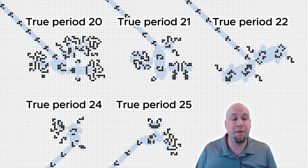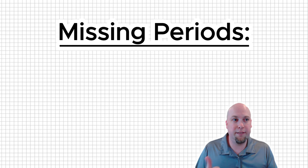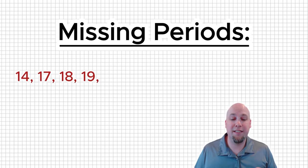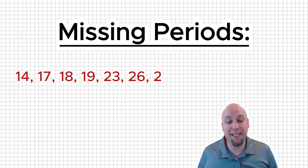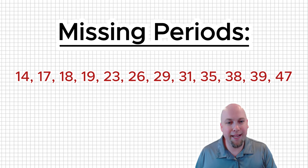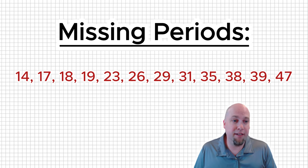The only periods for which we don't know yet whether or not there's a true period glider gun of that period are 14, 17, 18, 19, 23, 26, 29, 31, 35, 38, 39, and 47. Every other period, we either have an explicit example of a true period gun of that period, or we have a method of construction at the very least for constructing a gun of that period.